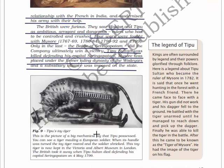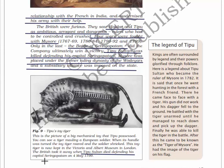Here you will see Tipu's toy tiger - a big mechanical toy that Tipu possessed. It shows a tiger mauling a European soldier, and when its handle was turned the toy tiger roared and the soldier shrieked. This toy tiger is now kept in the Victoria and Albert Museum in London. The British took it away when Tipu Sultan died defending his capital Seringapatam on the 4th of May 1799.